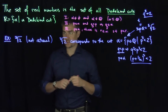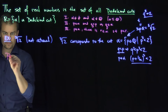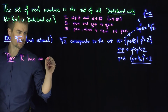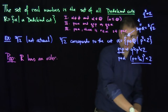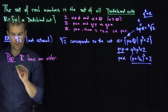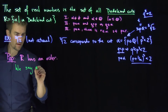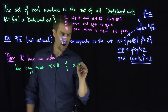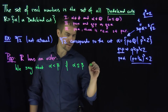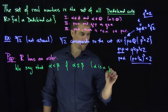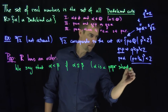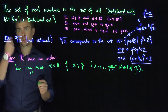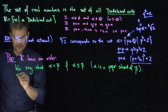Now I'd like to show that there is a natural order on this set. Proposition: R has an order. The proof of this fact is relatively straightforward. Since R is the set of Dedekind cuts, we say that alpha is less than beta if alpha is a proper subset of beta. To be an order, we have to satisfy two conditions: trichotomy and transitivity. Let's do transitivity first — that's the easiest.